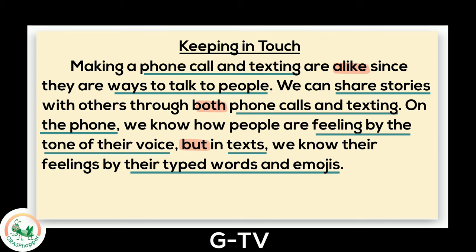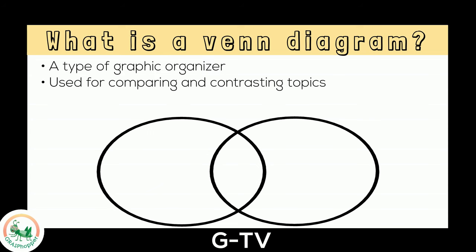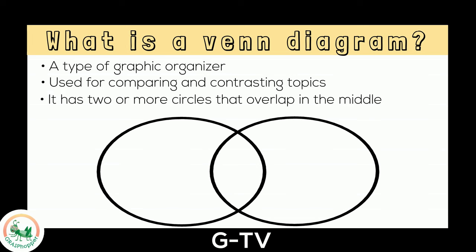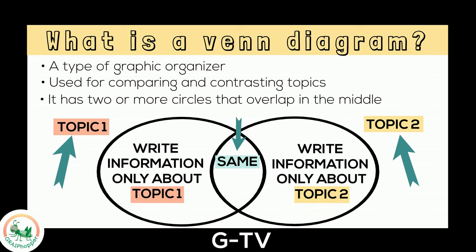We can use the signal words to help us fill out a Venn diagram. What is a Venn diagram? It's a type of graphic organizer that can be used for comparing and contrasting topics. It has two or more circles that overlap in the middle. To use this organizer, label each circle with one of the topics from the text. The middle inner section that overlaps is for comparing — this is where you write the information that is the same about the topics. The outer sections that do not overlap are for contrasting, where you write information that is only about one of the topics.